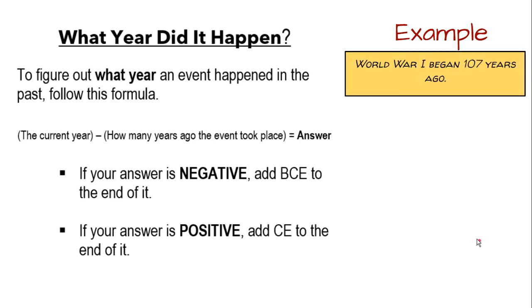Our final example will be this. World War I began 107 years ago. We're going to set up our equation just like we did with the last one. Start with the current year and subtract how many years ago it took place, so in this case 107. This is the larger number now, this is the smaller number. I know I'm going to get a positive number, so I'm going to add CE to the end of it. World War I started in 1914 CE. Since it's positive, I'm adding CE to the end of it.